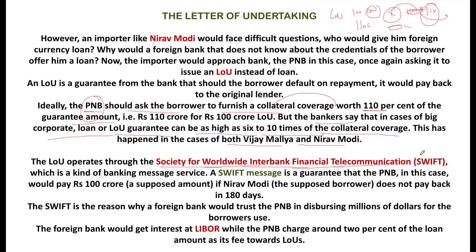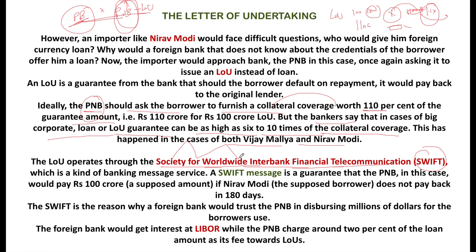The LOU operates through SWIFT — the Society for Worldwide Interbank Financial Telecommunication — which is a banking messaging service. SWIFT is the reason why a foreign bank would trust PNB. Why would a foreign bank trust PNB to disburse millions of dollars for a borrower like Nirav Modi? Because the LOU sent through SWIFT is an international guarantee — that is how the entire system works.